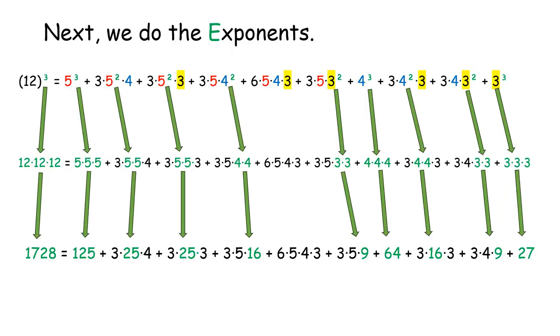Next, we do the exponents. 12 cubed is 12 times 12 times 12, or 1728. 5 cubed is 5 times 5 times 5, or 125. 5 squared is 5 times 5, which is 25.